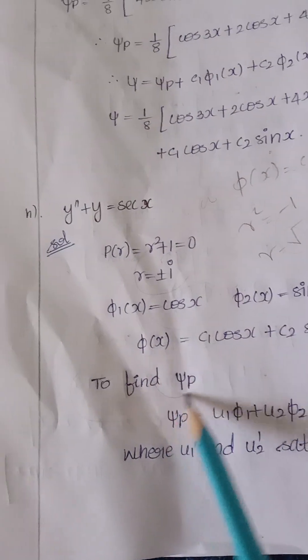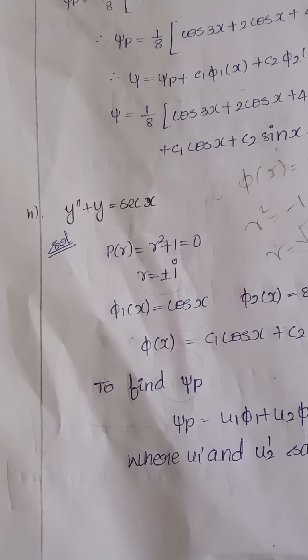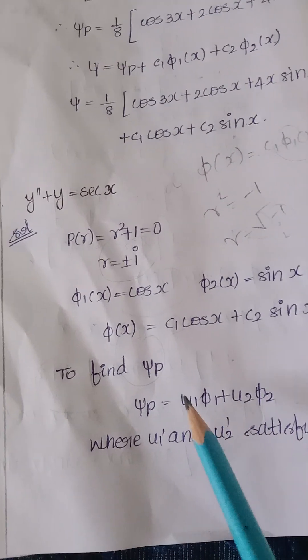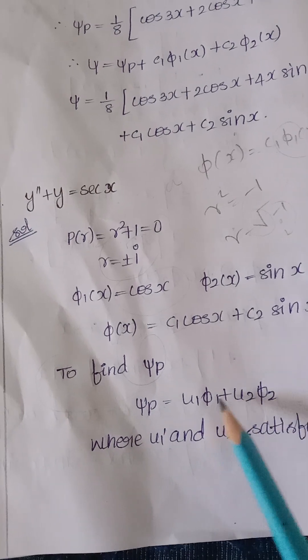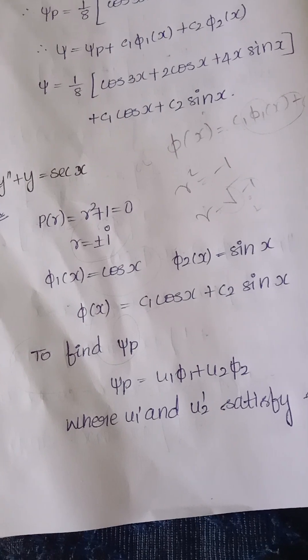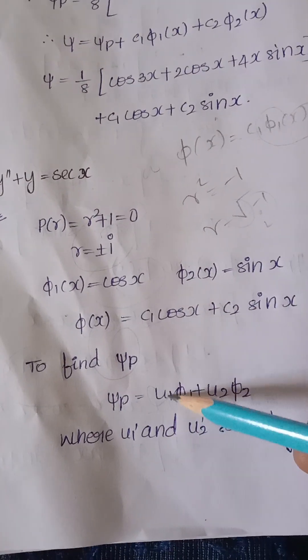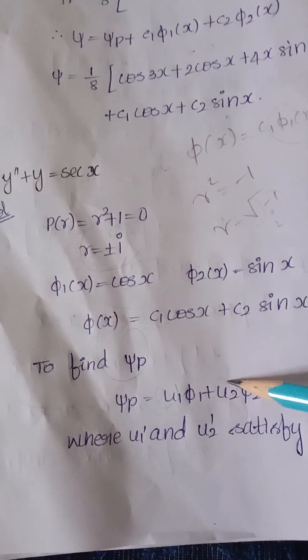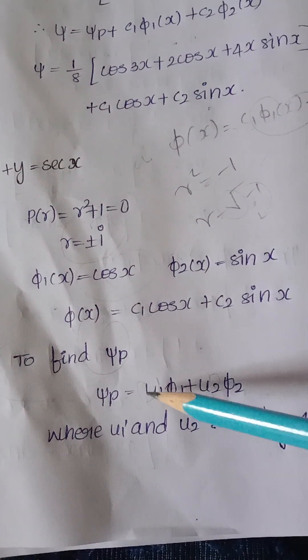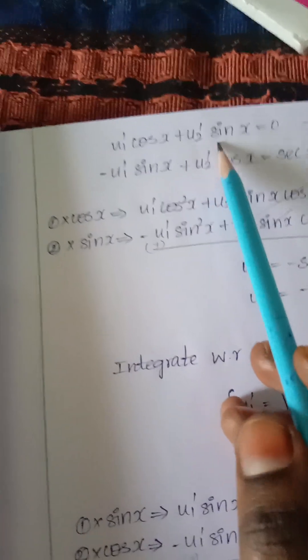The particular solution ψ_p is found by variation of parameters: ψ_p = u₁φ₁ + u₂φ₂, where u₁ and u₂ satisfy a system. We replace u₁ and u₂ with their derivatives, giving the first equation: u₁'cos(x) + u₂'sin(x) = 0.